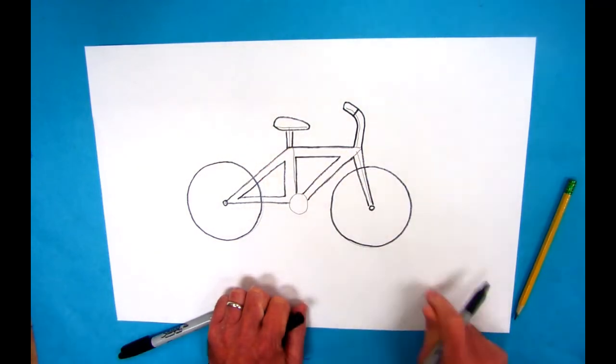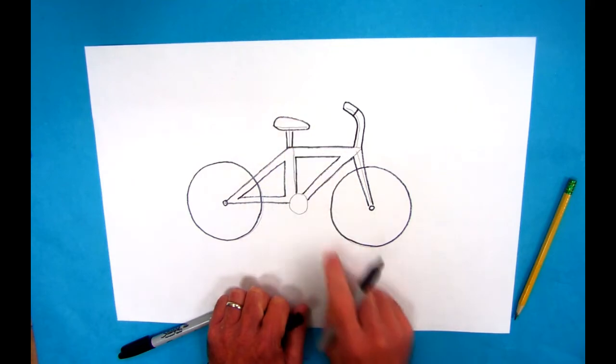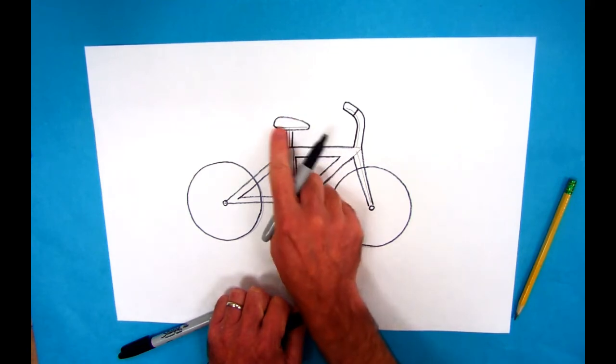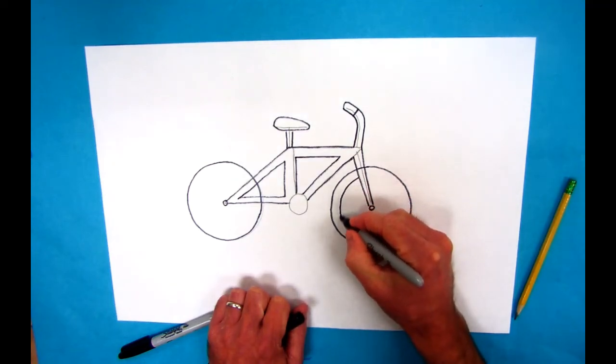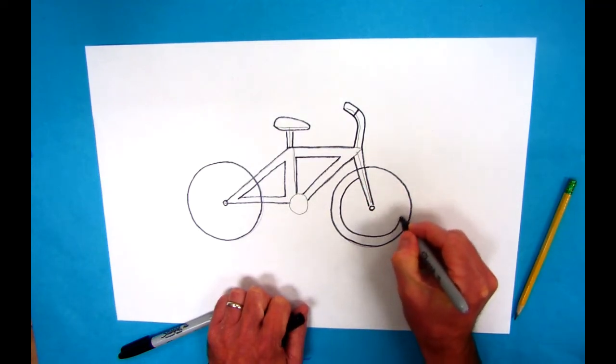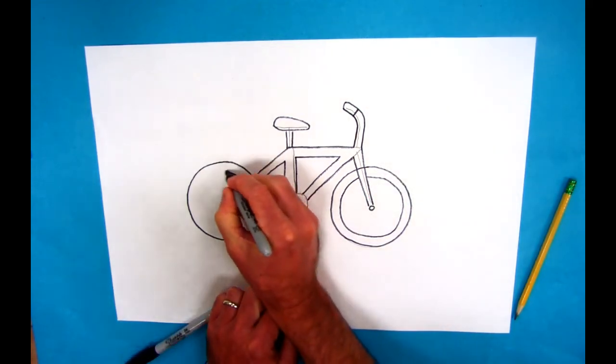The bike seat sits on what's called the bike seat post, and that post is just a rectangle. The seat itself, depending on how soft you make it, might be a little bit curved at the top and flat at the bottom. To make your bike look like it has tires, just double the lines.